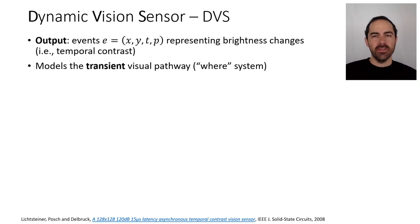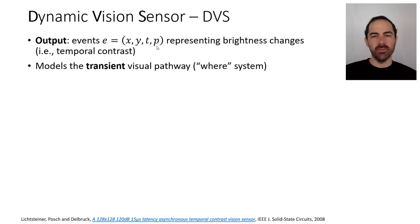The first and most popular one is called the dynamic vision sensor or DVS. This is an event camera whose events represent brightness changes and they output a stream of events. Each event has the pixel coordinates of the brightness change, the time at which the change happened, and the polarity, which is the sign of the brightness change.